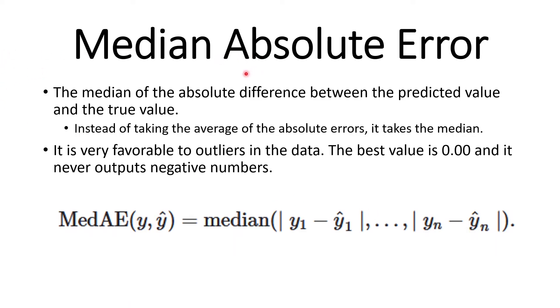Then we have median absolute error. Median absolute error is the median of the absolute difference between the predicted value and the true value. Instead of taking the average of the absolute errors, it takes the median.